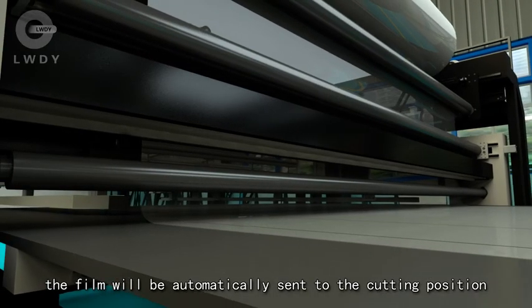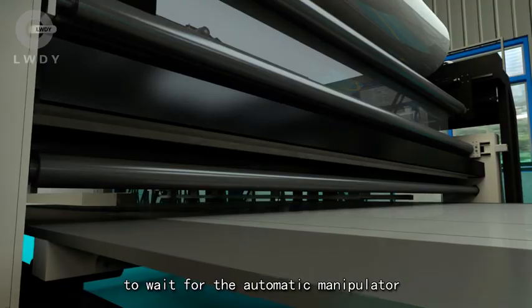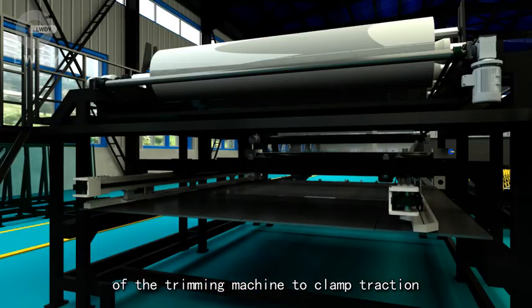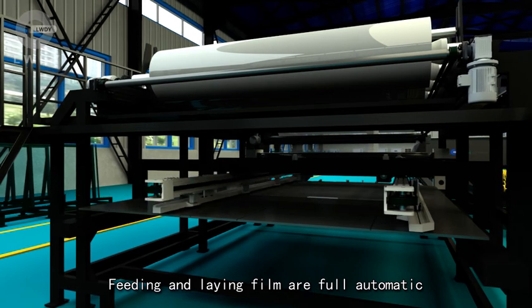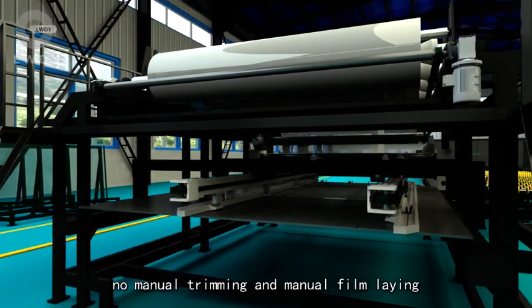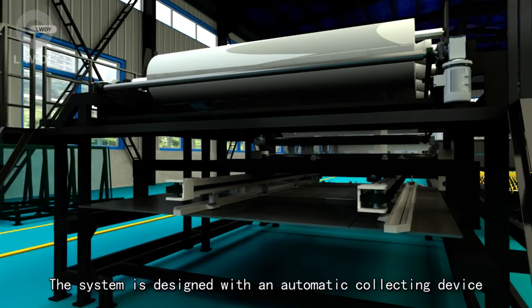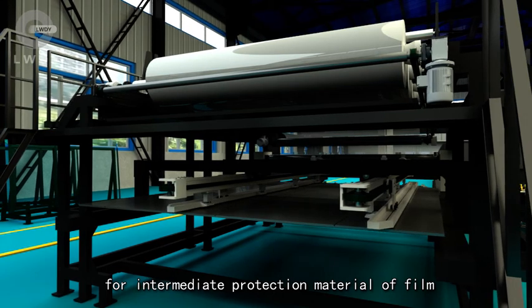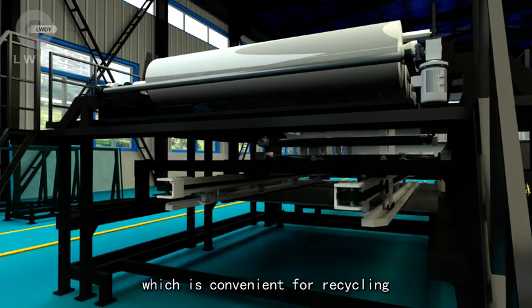The film will be automatically sent to the counting position to wait for the automatic manipulator of the trimming machine to clamp and traction. Feeding and laying film are fully automatic, no manual trimming and manual film laying. The system is designed with an automatic collecting device for intermediate production material of film, which is convenient for recycling.